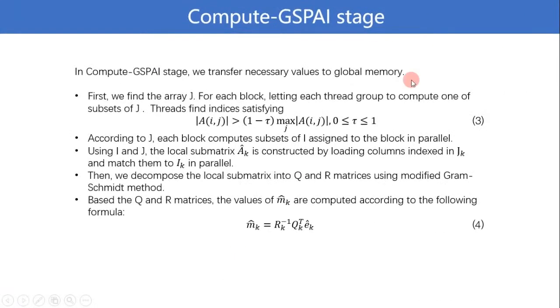The second part is compute GSPAI stage. We transfer necessary values to global memory. In this part, we first find the array G. For each block, letting each thread group compute one O subset of G assigned to the block, and the threads find the indices satisfying formula 3. According to G, each block computes subsets of I assigned to the block in parallel.